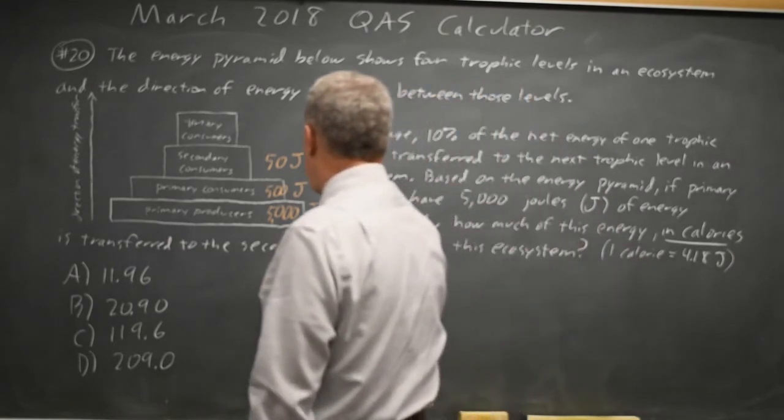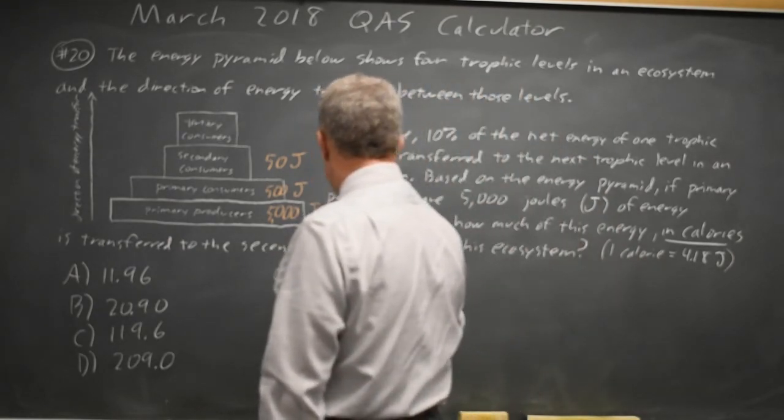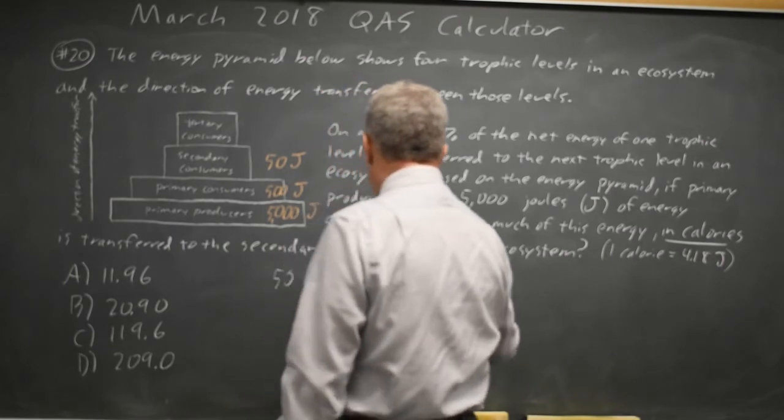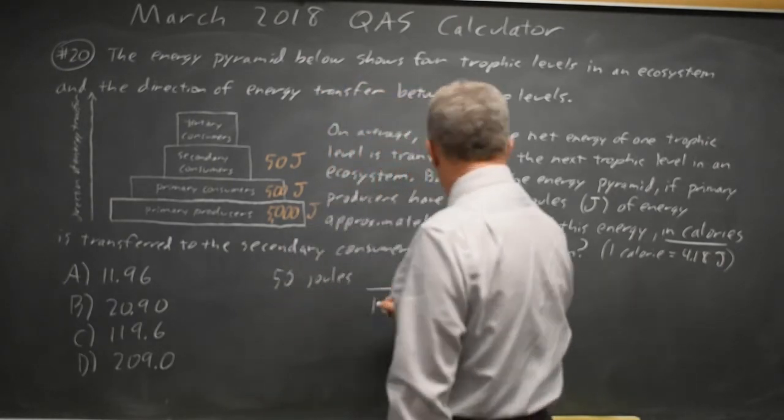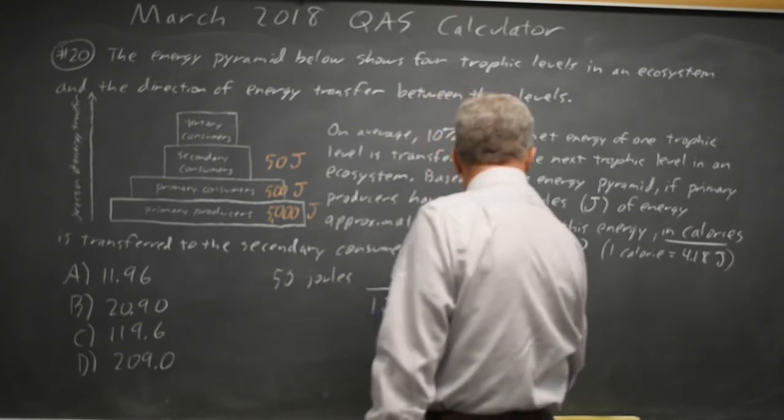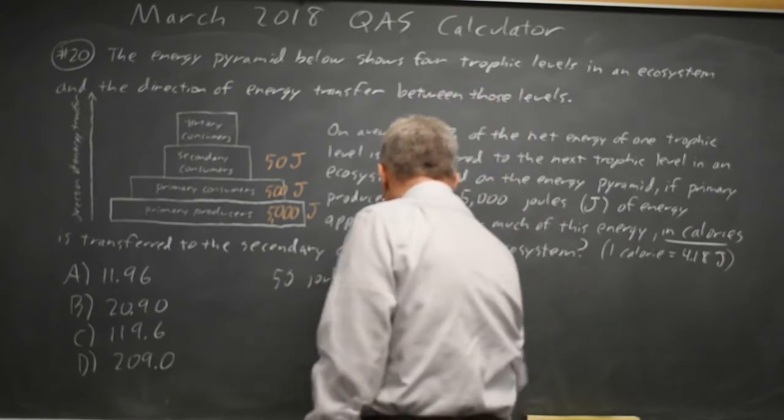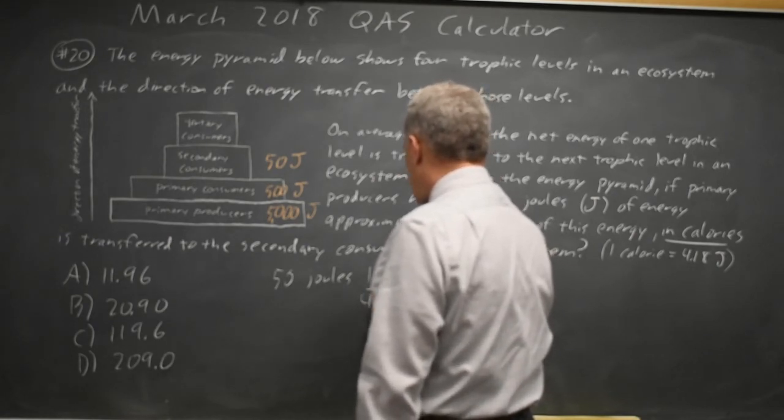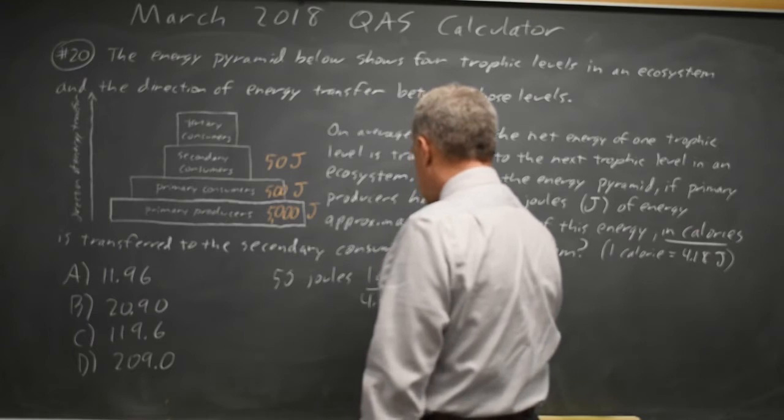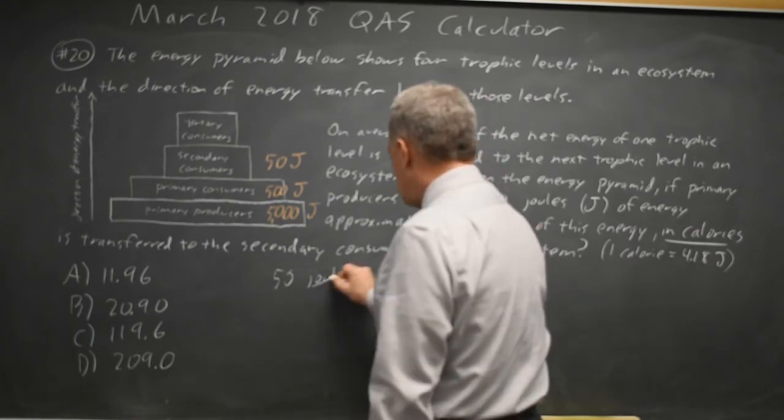So I have 50 joules. 1 calorie is 4.18 joules. Joules cancel.